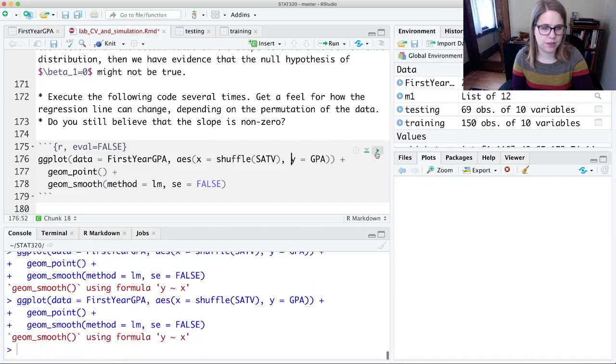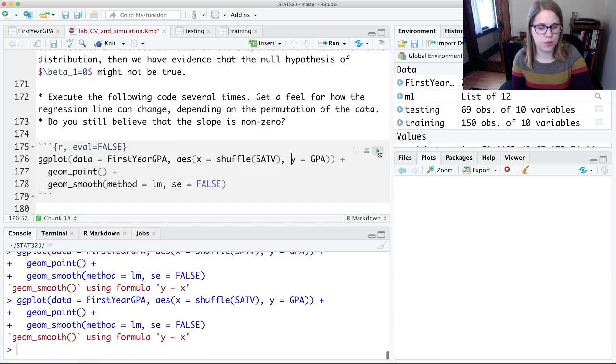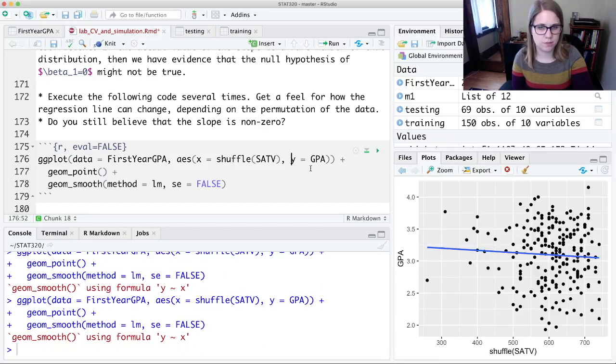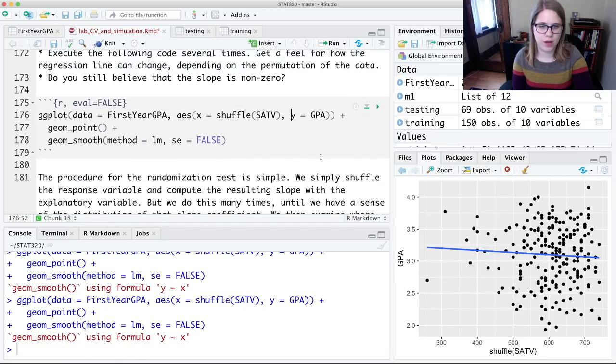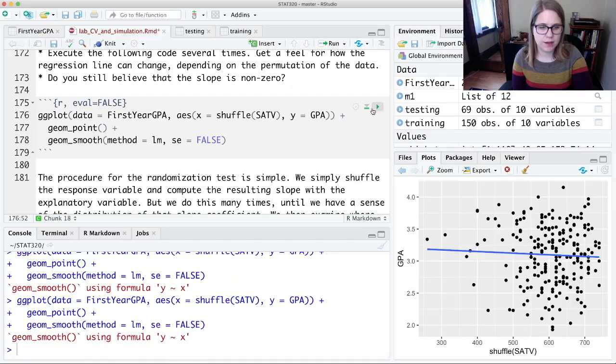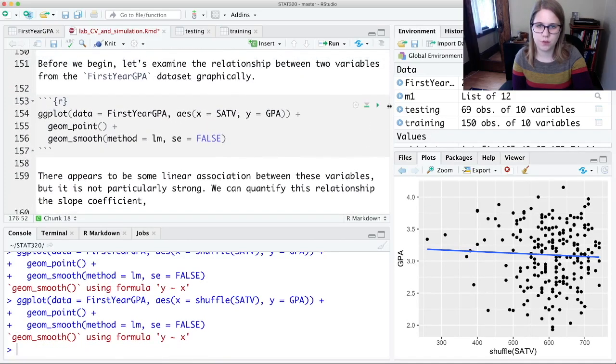Every time I click this, I'm getting a different shuffled version of SATV associated with GPA. And so if the null hypothesis were true, these are the sorts of slopes that we could get just by chance. So, kind of looking at these plots,